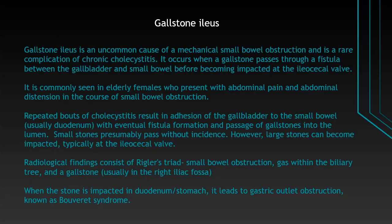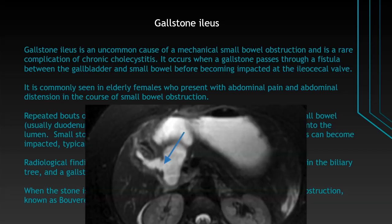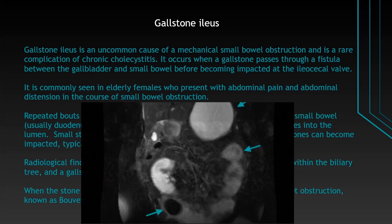Gallstone ileus is an uncommon cause of mechanical small bowel obstruction and is a rare complication of chronic cholecystitis. It occurs when a gallstone passes through a fistula between the gallbladder and small bowel before becoming impacted at the ileocecal valve.